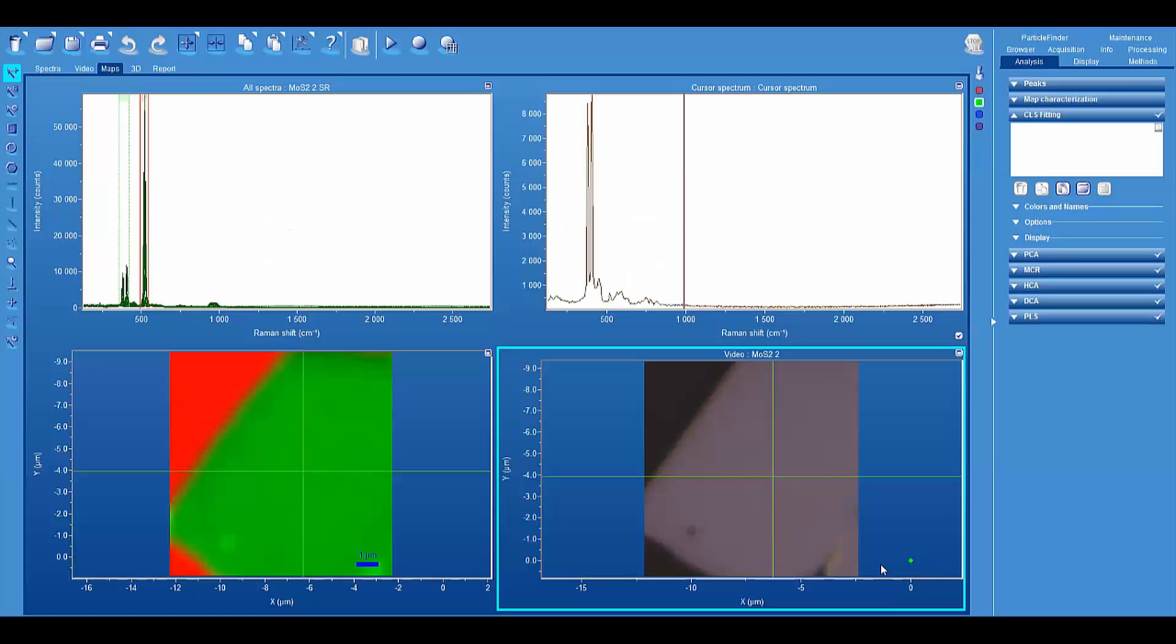Now that we've briefly discussed the important considerations for Raman imaging and some of the experimental details, let's take a look at the results. In the lower right hand corner here, you see a reflected light image of a flake of molybdenum disulfide on a silicon substrate. So here's the disulfide and the dark area, which is a little bit out of focus happens to be the silicon substrate.